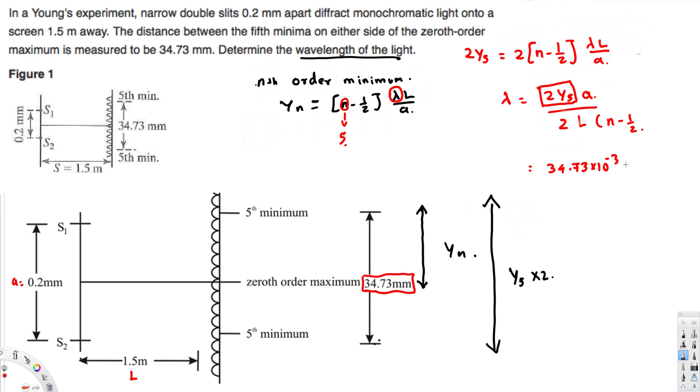And a value is 0.2 millimeters, so this is going to be 0.2 times 10 to the power of minus 3, divided by 2 times L, L is 1.5, times (n minus 1/2). n is fifth order minimum, so this is going to be 5 minus 1/2. And if you calculate this one, you're going to get 514.5 times 10 to the power of minus 9 meters.